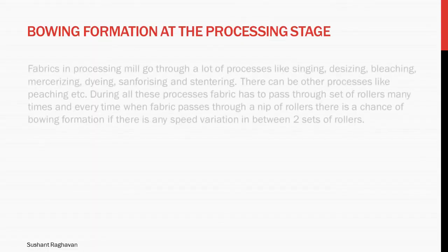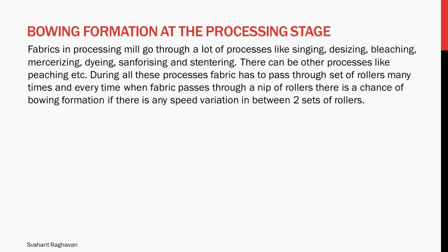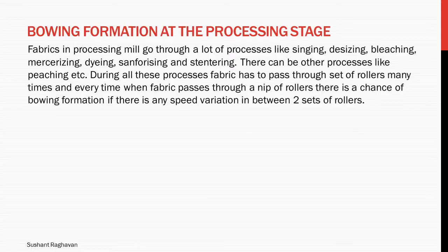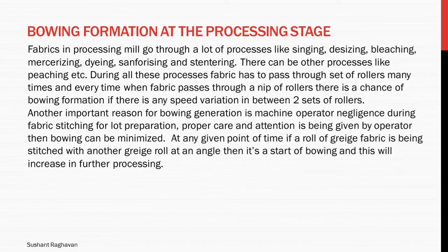Bowing formation at the processing stage: fabric in a processing mill goes through a lot of processes like sinking, desizing, bleaching, mercerizing, dyeing, sanforizing and stentering. There can be other processes like peaching etc. During all these processes, fabric has to pass through sets of rollers many times, and every time the fabric passes through the nip of rollers there is a chance of bowing formation if there is any speed variation between two sets of rollers. Another important reason for bowing generation is machine operator negligence during fabric stitching for lot preparation. If proper care and attention is given by the operator, bowing can be minimized. If a roll of gray fabric is stitched with another gray roll at an angle, that is the start of bowing, and this will increase in further processing.